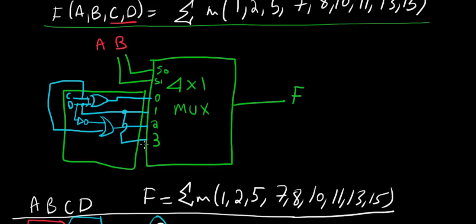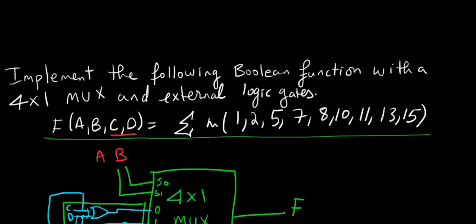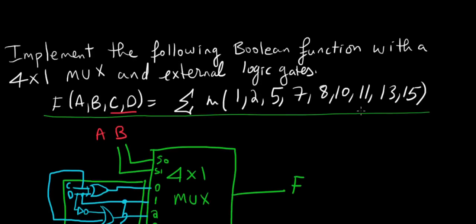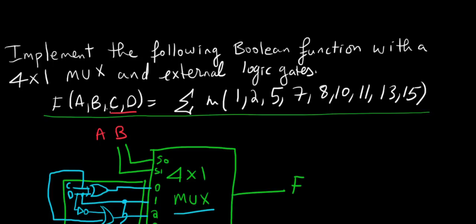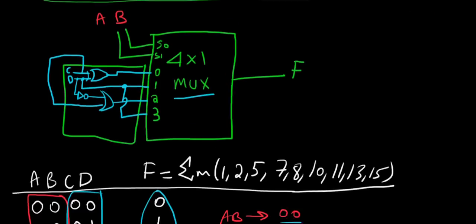So basically we've solved this problem: implement the following Boolean function with a 4x1 mux and external logic gates. The external logic gates used are C XOR D on input 0, D on input 1, D-bar OR C on input 2, and D on input 3, with A and B as selection lines. I hope this helps, and good luck on your example. Thank you.